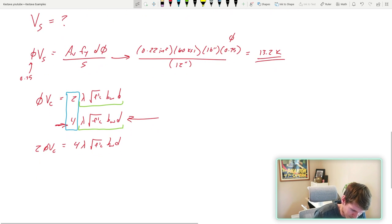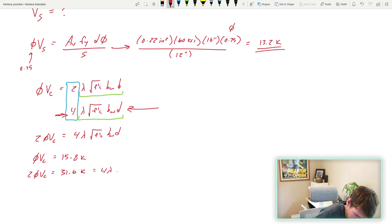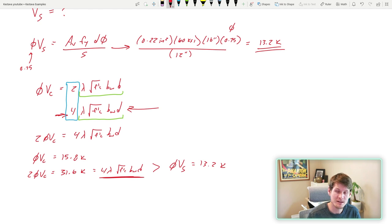You can save yourself a little time because we already solved for phi VC, which is equal to 15.8 kips. So that means two phi VC equals 31.6 kips, which equals four lambda square root f'c base width depth. And we can compare that. So we see that two phi VC is greater than phi VS, which we calculated above equaling 13.2 kips. So we are less than this value here. So let's head back to the table and check out what that means for our spacing maximums.